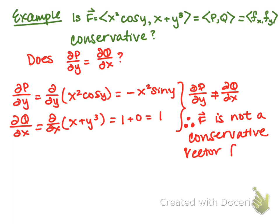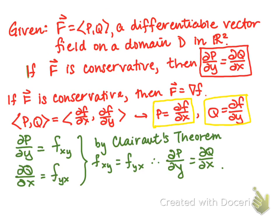Now the question is: is the converse also true? We showed that if F is conservative then partial P partial y equals partial Q partial x. But is it true that if partial P partial y equals partial Q partial x, then F is necessarily conservative?